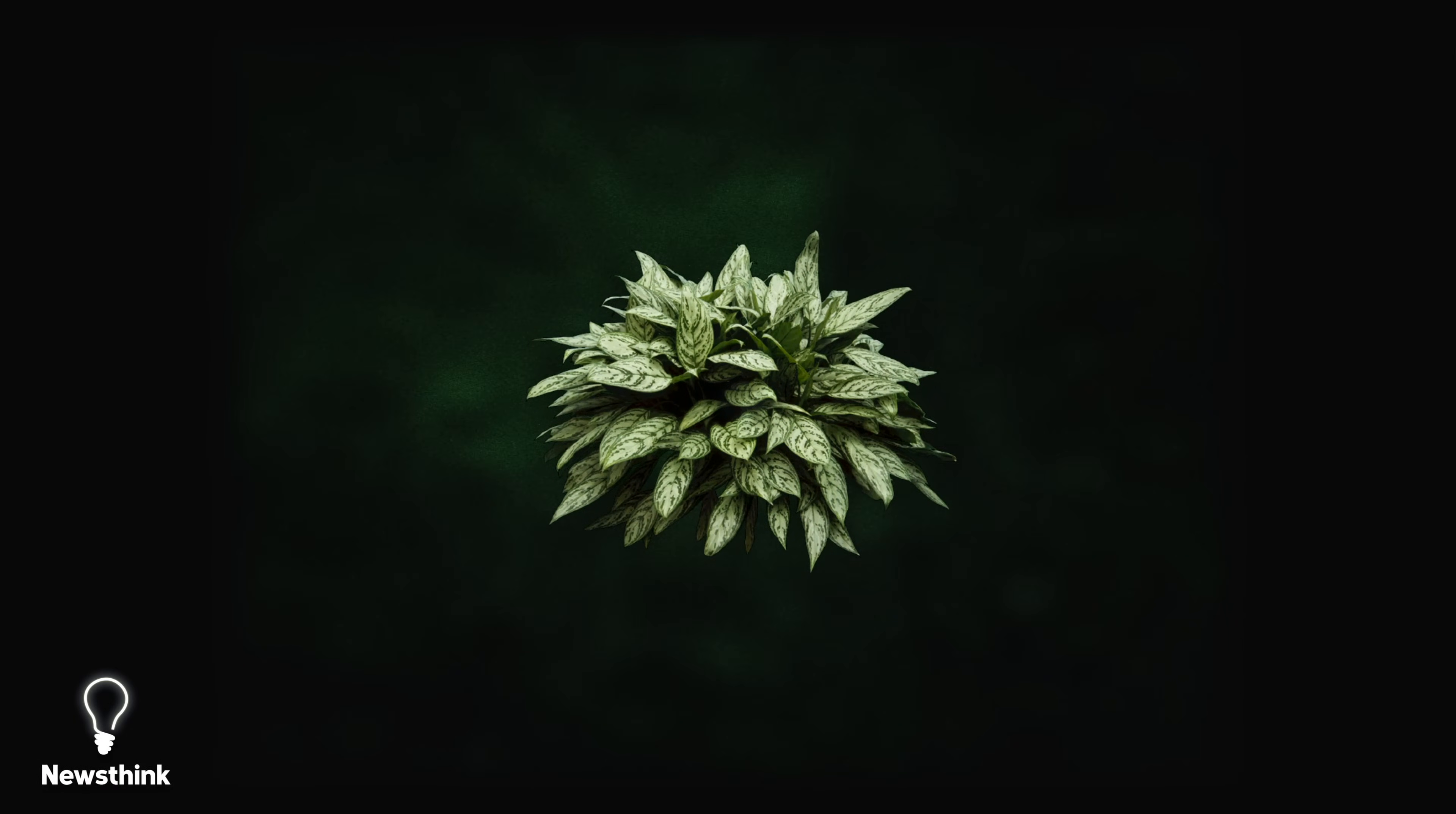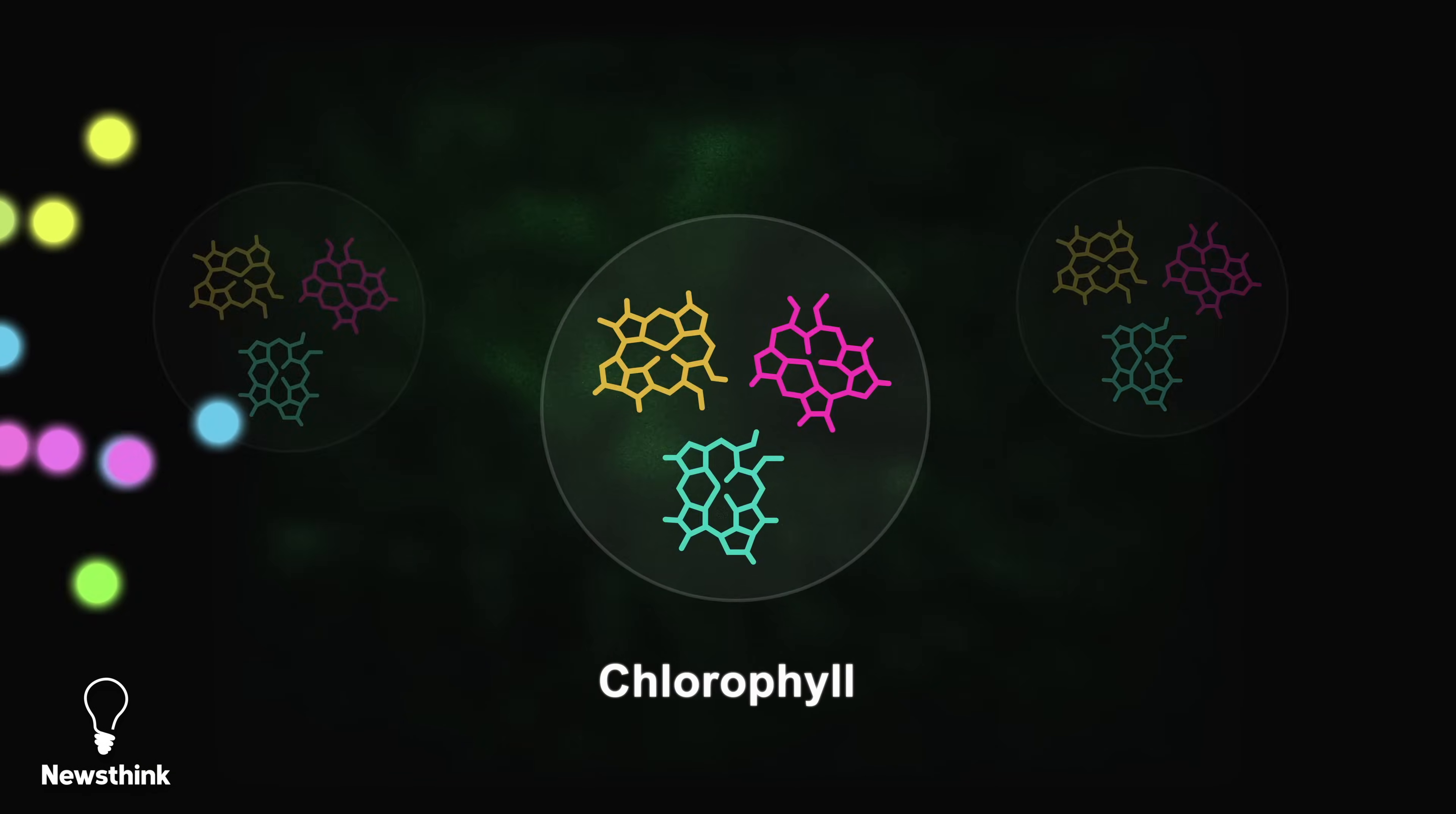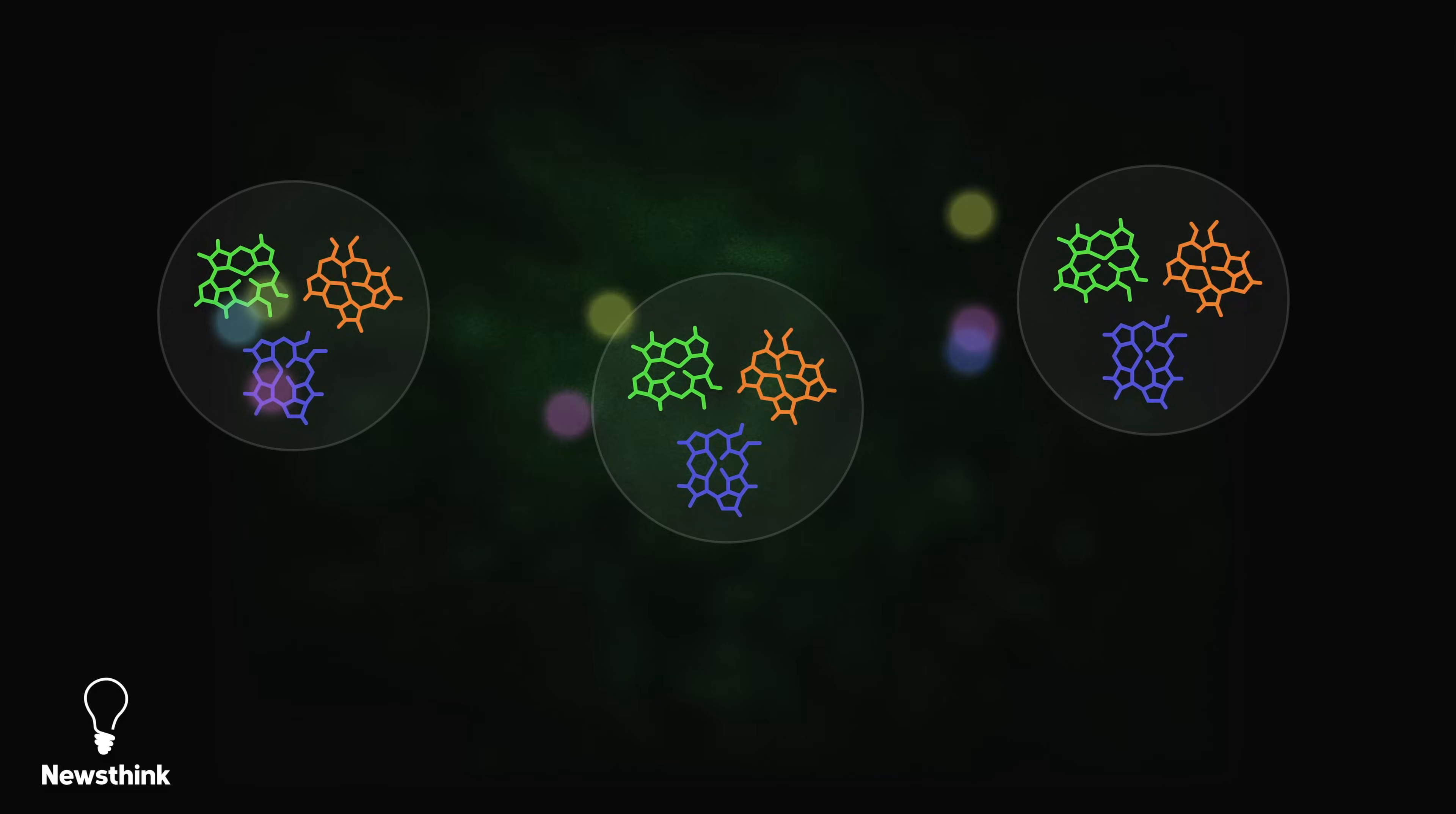When sunlight reaches a plant, light particles called photons are absorbed by special molecules inside the plant cells called chlorophyll. Instead of hoarding the sunlight's energy, each chlorophyll molecule shares it with the other molecules.